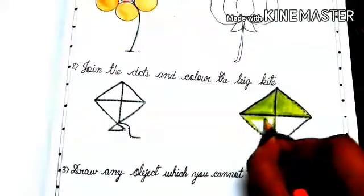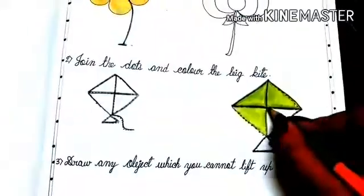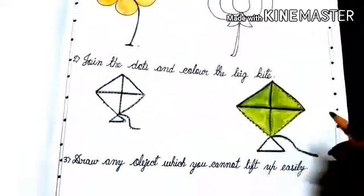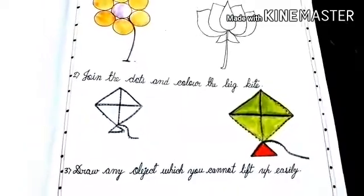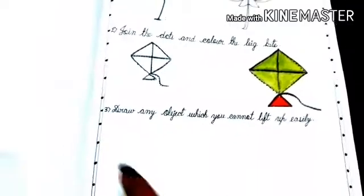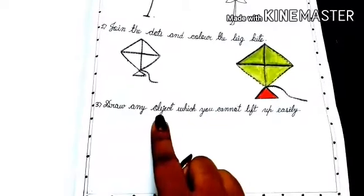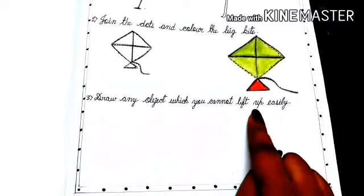The kite is looking nice right? Yes. Our kite is complete. Now number three, draw any object which you cannot lift up easily.